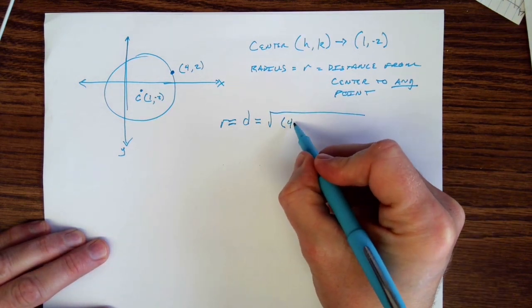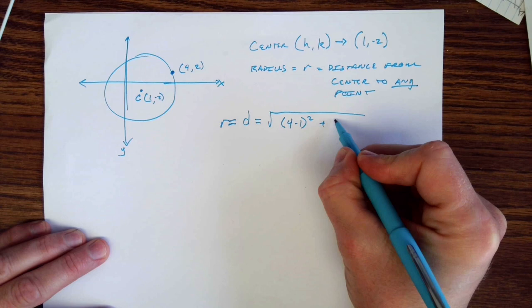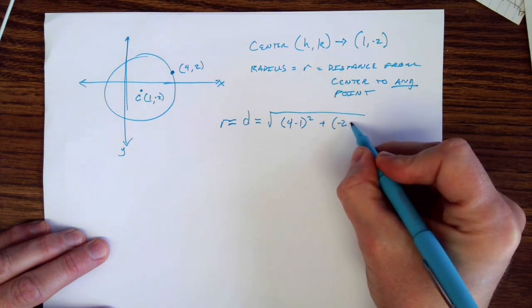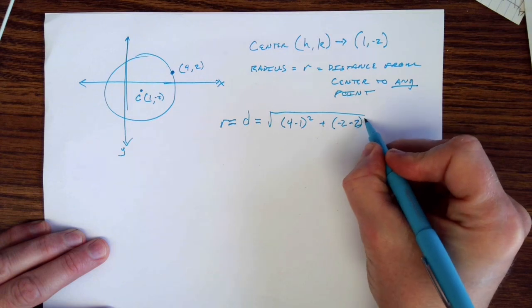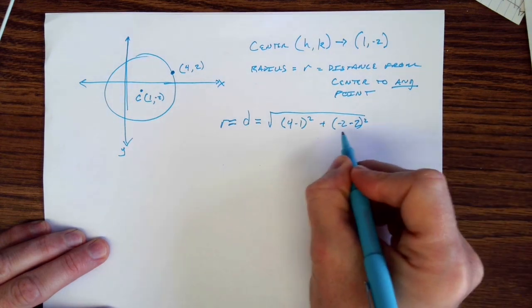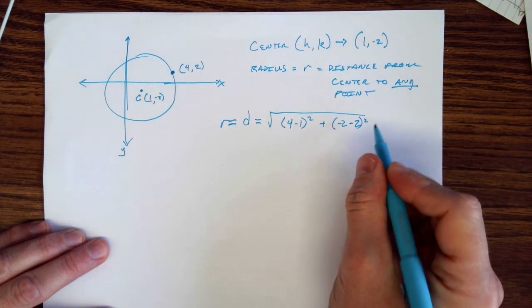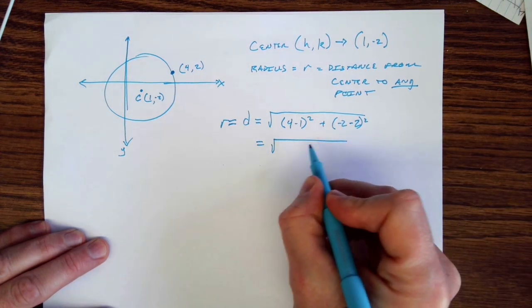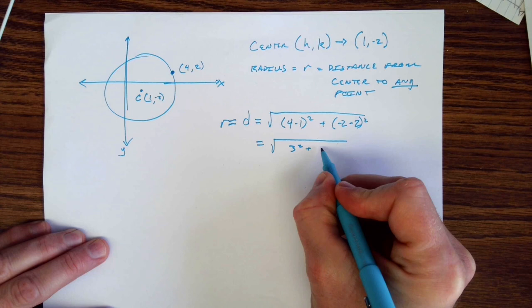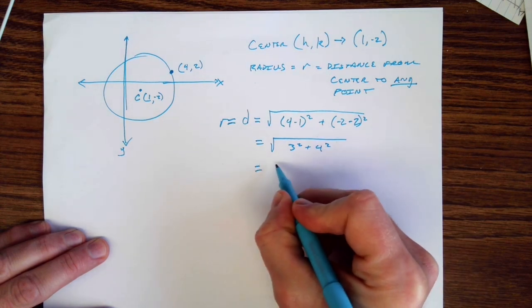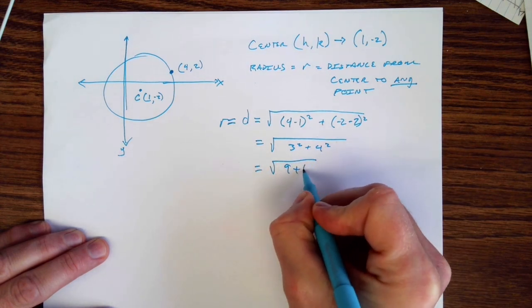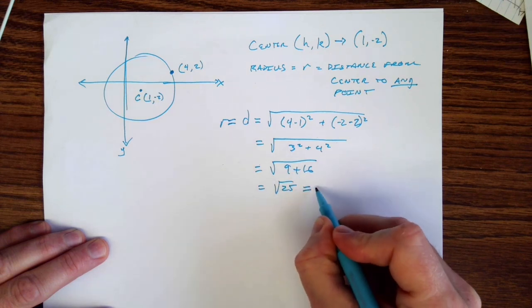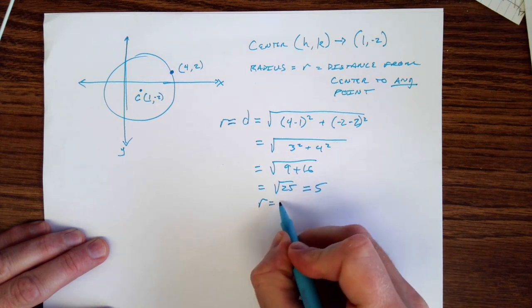I'm going to subtract my x's, so 4 minus 1 squared plus negative 2 minus 2 squared. Actually, I guess I did that second one backwards. It doesn't really matter because we're squaring it, so the negatives are going to disappear anyway. I get 3 squared plus 4 squared, which is 9 plus 16, which means I have the square root of 25, which is 5. So my radius is 5.